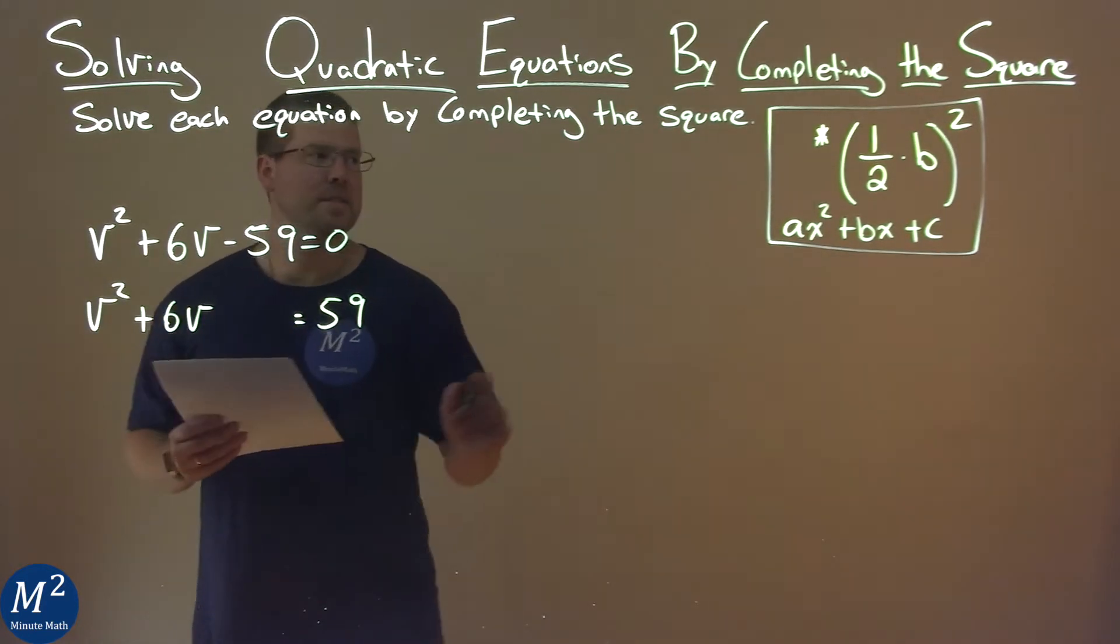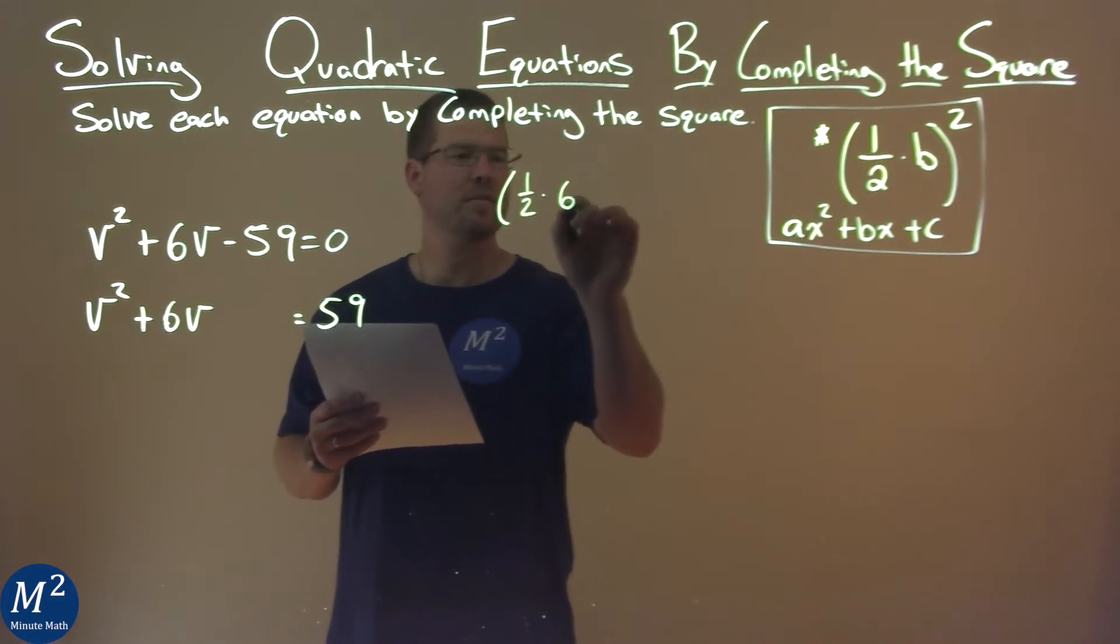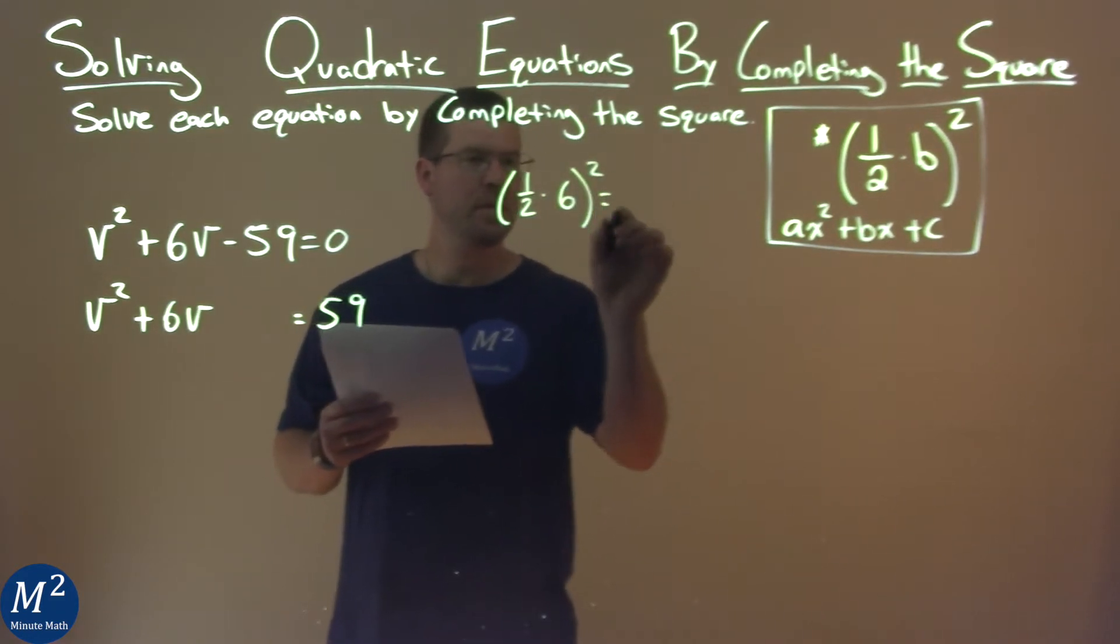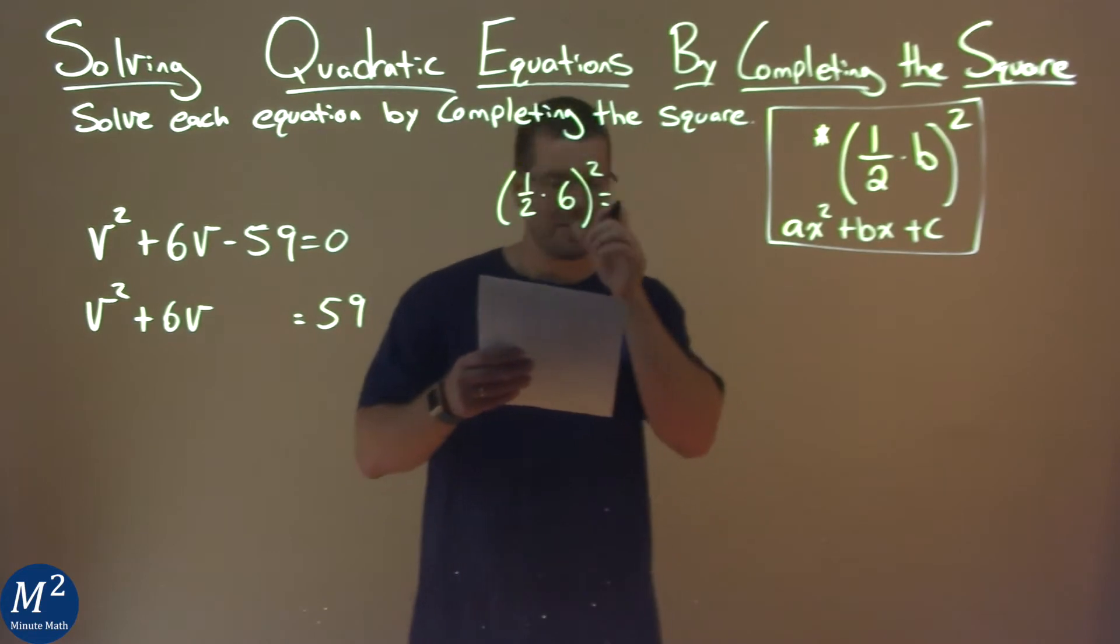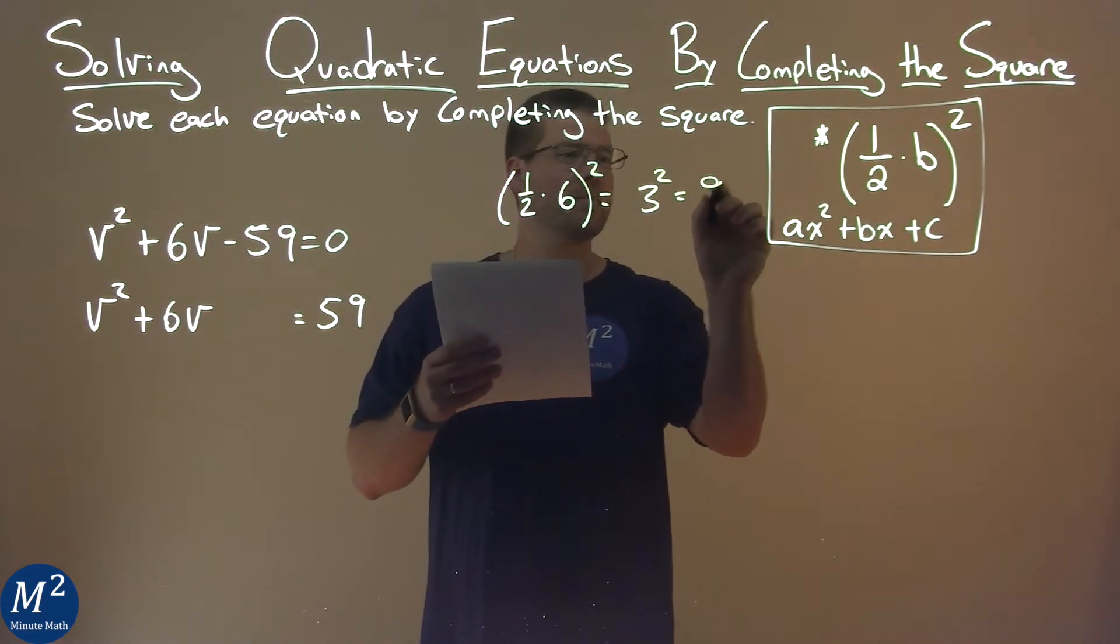Now I'm going to take my b value, which is 6, and use my formula: one-half times 6, squared. One-half times 6 gives me 3, and 3 squared is 9.